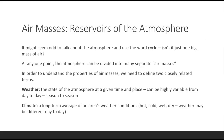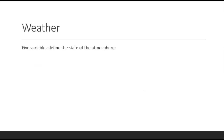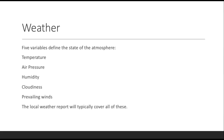There might be slightly hotter or slightly colder days in those areas, but when we talk about climate, it's the long-term average. There are five variables that are going to be used to define the state of the atmosphere at any given place: temperature, air pressure, humidity, cloudiness, and prevailing winds.